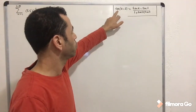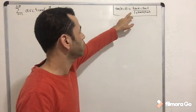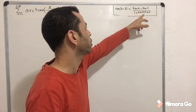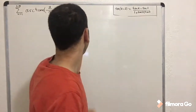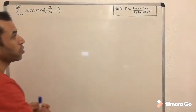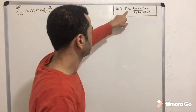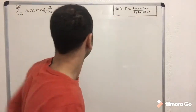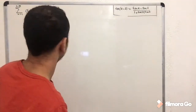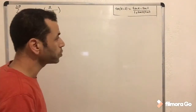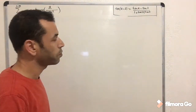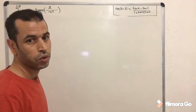We already know that tan(a − b) = (tan a − tan b) / (1 + tan a · tan b). How do we transfer this to get the expression 2/n²? If you want to try it yourself, pause the video and come back to see how to solve this problem.